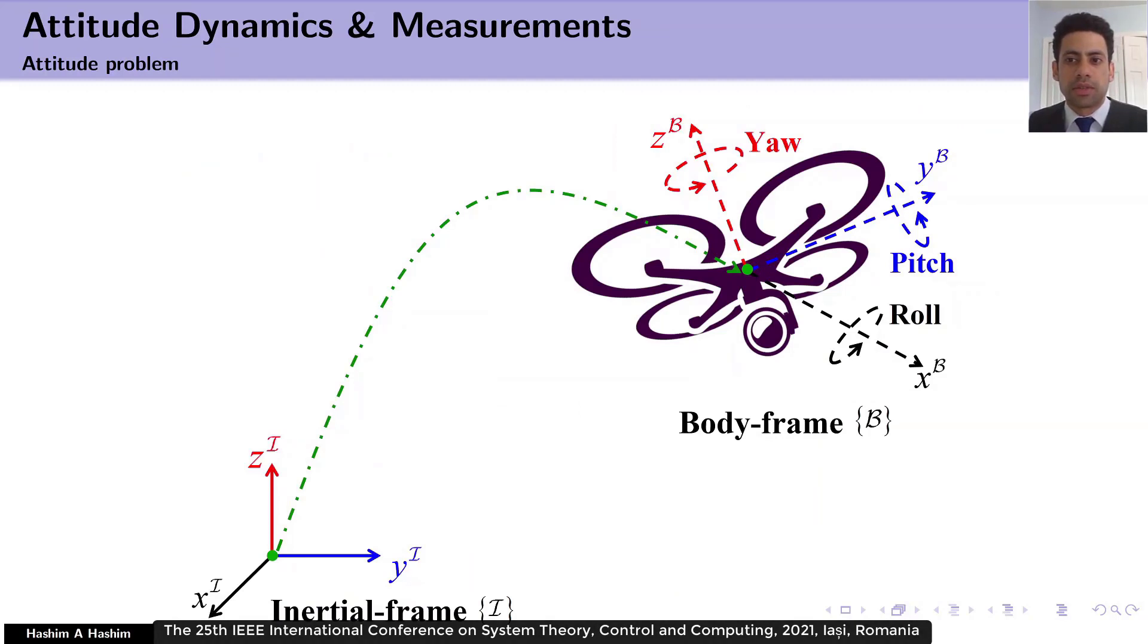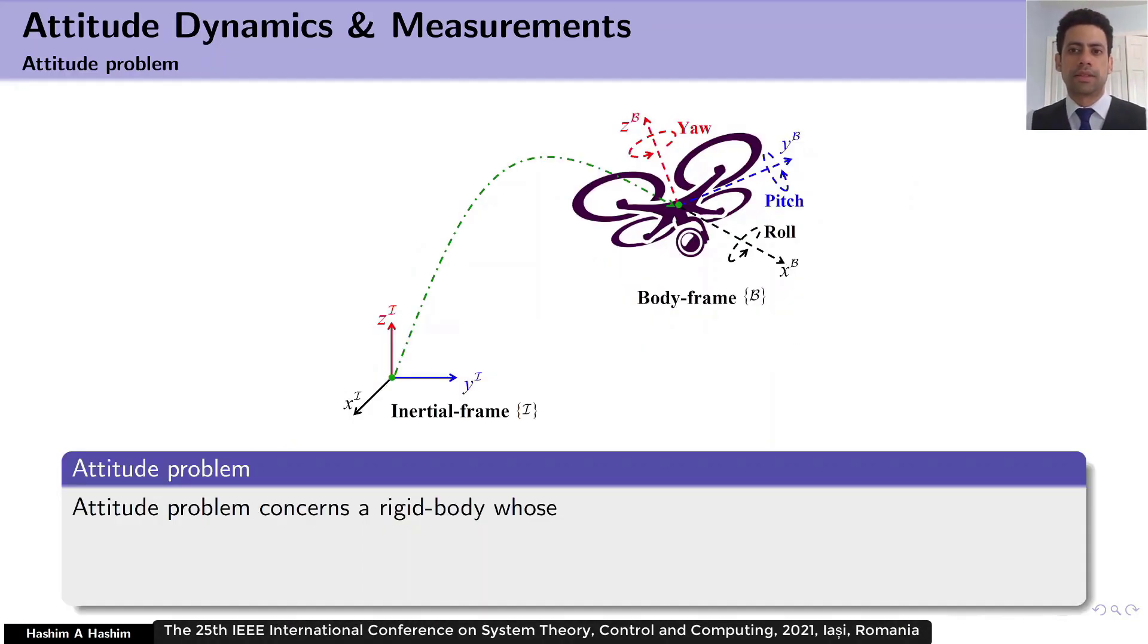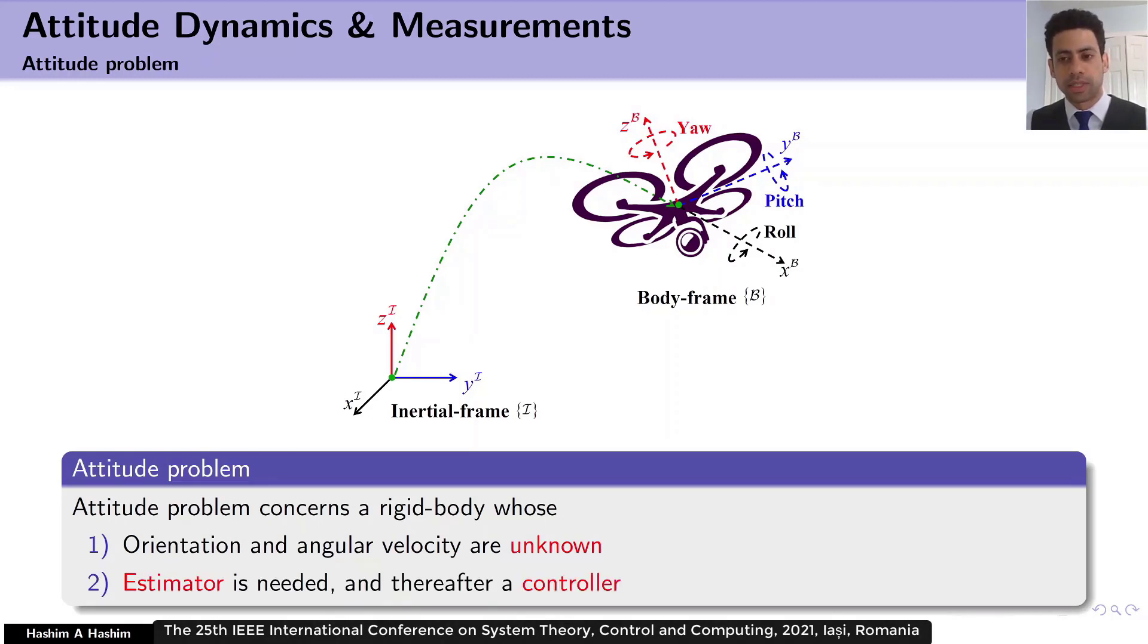To better understand the attitude estimation problem, let's turn to the figure on the slide. The goal is to obtain the unknown vehicle's orientation and angular velocity in a moving frame, also known as a body frame, with respect to a fixed inertial frame. Again, the attitude problem concerns a rigid body whose orientation and angular velocity are unknown.